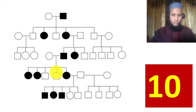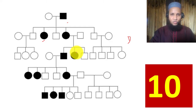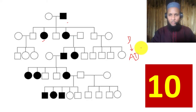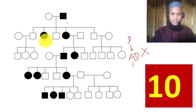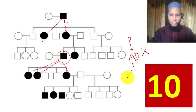Example 10: There is no skipping of generation — this is dominant. Checking for male-to-male transmission: there is no male-to-male transmission, so it cannot be autosomal dominant. Is it X-linked dominant? We look for sex biasness — the affected father has all daughters affected: this man has two daughters, both affected; this man has three daughters, all affected. Therefore this is X-linked dominant.